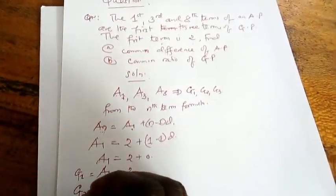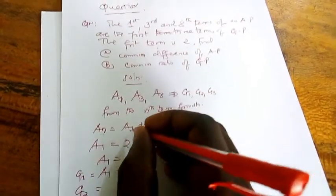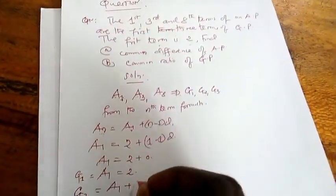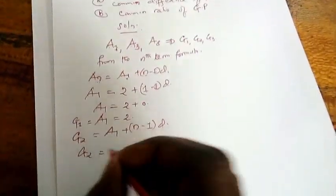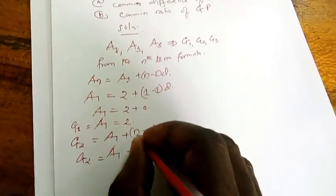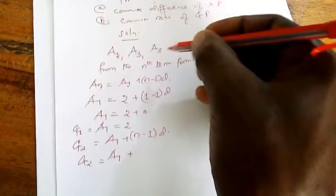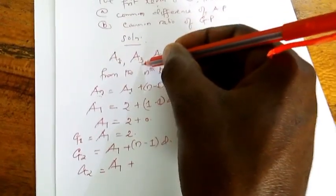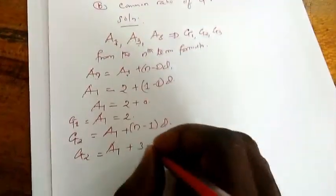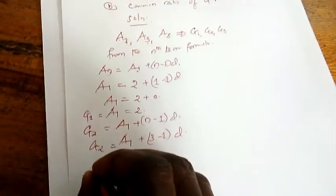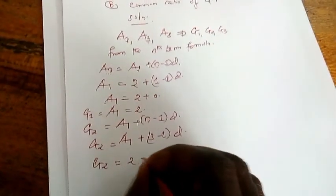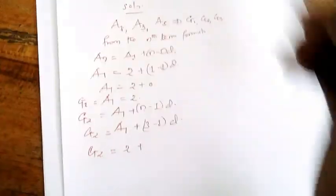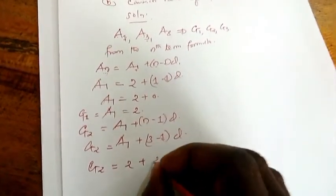Then let us see the second term. For the second term, it will be G2. If we take from the nth term formula, which says A1 plus N minus 1 times D, we say G2 equals 2. Because A1 plus N, remember we are talking about the term we were given, which was the third term. So in N, we put 3, minus 1, then times D.